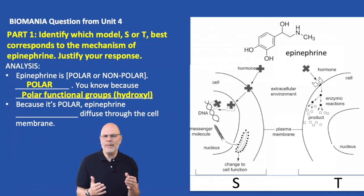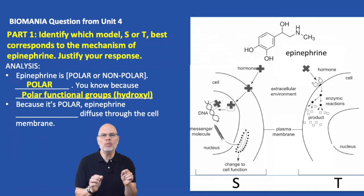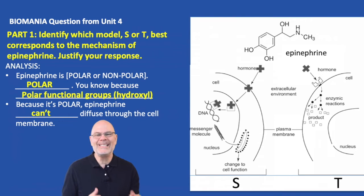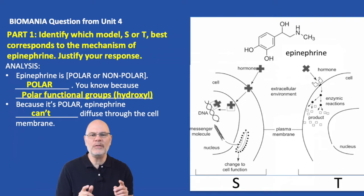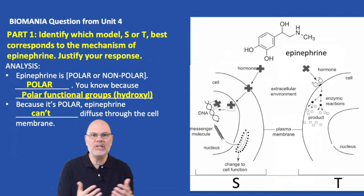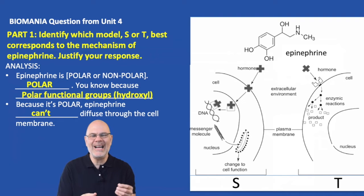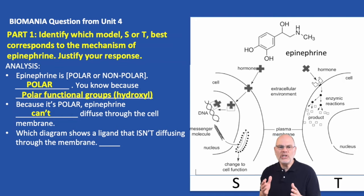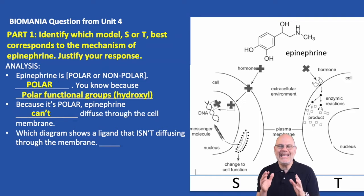Now, because it's polar, epinephrine can't diffuse through the cell membrane. That's because of the basic property that like dissolves like. The membrane of the cell is non-polar on the inside, and it won't allow polar molecules to pass through it. Finally, which diagram is showing a ligand — something that binds with something else — that isn't diffusing through the membranes? It's T. T is showing a molecule that's docking the membrane receptor.